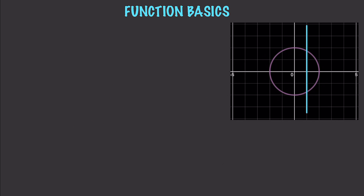Similar to the domain, we have the range of a function, which is all possible output values. For example, if you have the function x squared, the range is going to be all positive numbers, while the domain is going to be all real numbers.